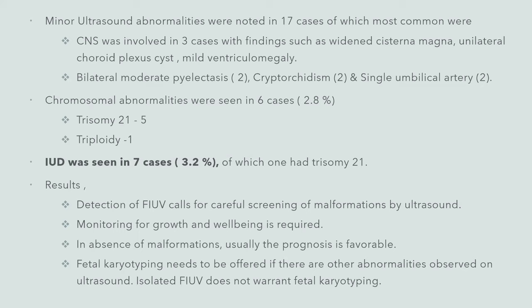Chromosomal abnormalities were seen in 6 cases, of which 5 had Trisomy 21. Intrauterine demise was seen in 7 cases. The results of the meta-analysis indicate that detection of fetal umbilical vein varix calls for careful screening and monitoring for growth. In the absence of malformations, the prognosis is usually favourable, and fetal karyotyping needs to be offered only if other abnormalities are observed on ultrasound.